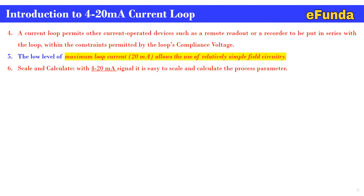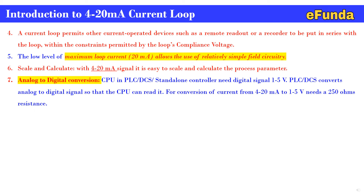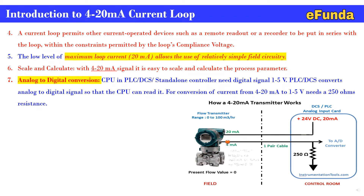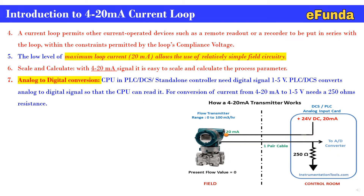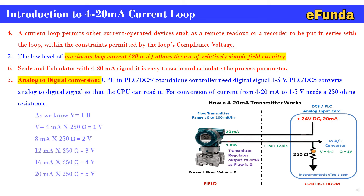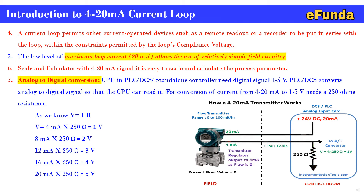Seventh, for analog to digital conversion, one can refer to the animation — a CPU can read the converted signal. To convert a current from 4 to 20 milliamp to 1 to 5 volt, a 250 ohm resistor is required. Using V = IR: 4 milliamp into 250 ohm equals 1 volt.